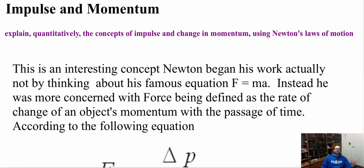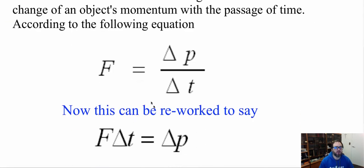Why are we looking at Newton's laws of motion to explain impulse? Interestingly enough, Newton began his work thinking of his famous equation, force equals mass times acceleration, not actually thinking about acceleration. Instead, he was more concerned with force being defined as the rate of change of an object's momentum over time. According to this equation, force is equal to the change in momentum divided by time. We can rearrange this so that force multiplied by the change of time equals the change of momentum.